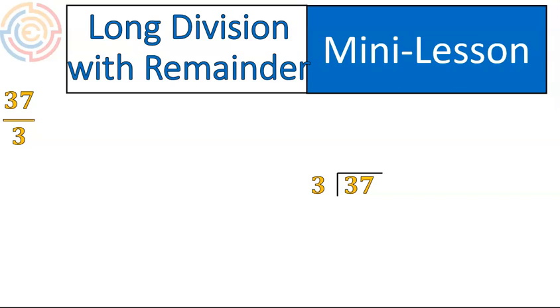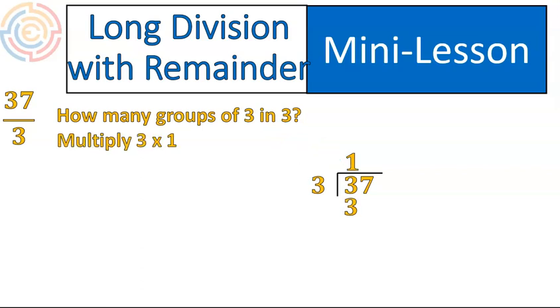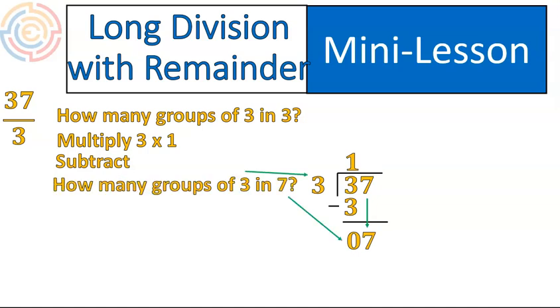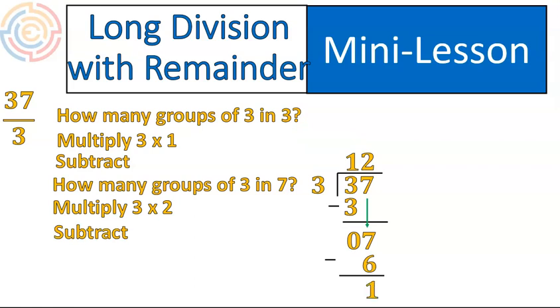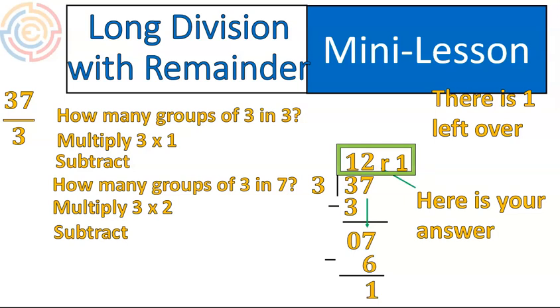37 divided by 3. We ask ourselves, we look at the first digit inside the division symbol, so that 3. And we ask ourselves, how many groups of 3 are there in 3? Well, there's 1. And then we multiply 1 times 3, which gives us 3. We subtract and get 0. Now, I'm going to drop this 7 down here. And I'm going to ask myself, how many groups of 3 are there in 7? And that response is going to go up top. There are 2 groups of 3 inside of 7. We multiply that 2 times 3, and we get 6, and then we subtract to get our final 1 that's left over. What this tells us is that there are 12 groups of 3 inside of 37, and there's 1 left over. We often write this as a remainder of 1. That's your final answer, typically.